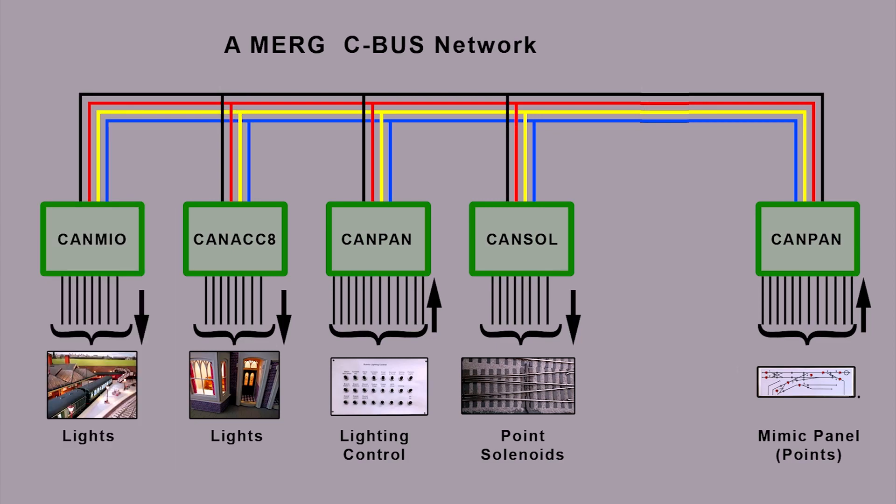Moving on, we can add another type of node: the CAN-MIO. As shown by the direction of the arrows, I've used the CAN-MIO here to drive even more lights on the layout. But the CAN-MIO can be set up to have either outputs or inputs — that's what the IO stands for — or a mix of both. The inputs to the CAN-MIO might be something like a train-on-track detector that detects the position of a locomotive somewhere on the layout. In my case it's set up to do 8 outputs and drive 8 lights.